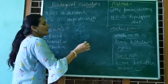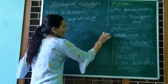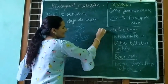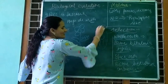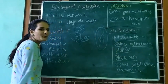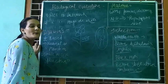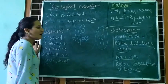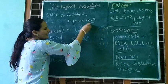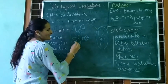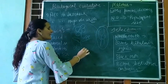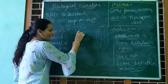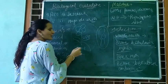When industrialization happened in England, pollution occurred, and the trees turned dark in color. The white moth on a dark tree could not hide and became an easy target. The dark-colored moth survived because it could camouflage with the dark tree.